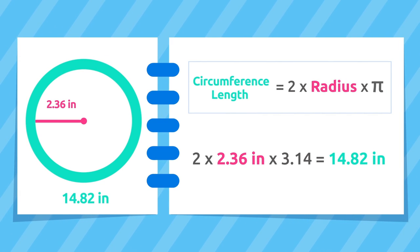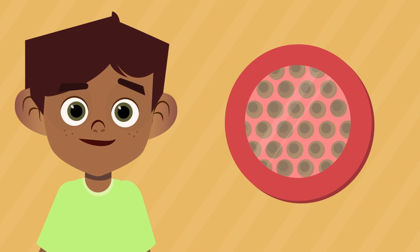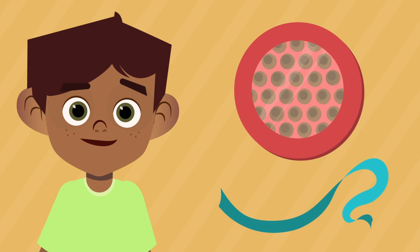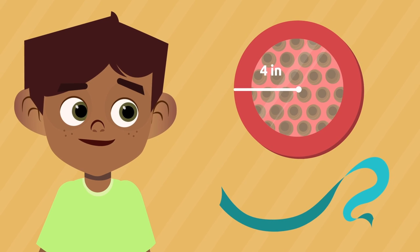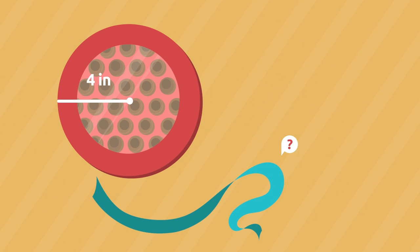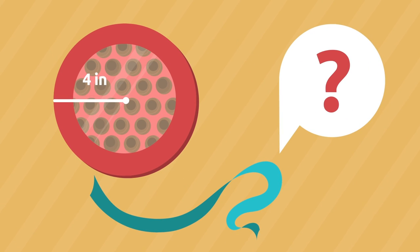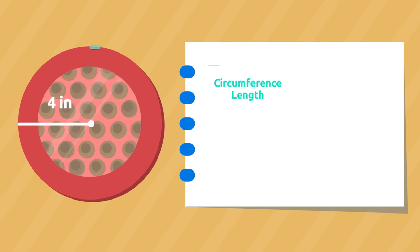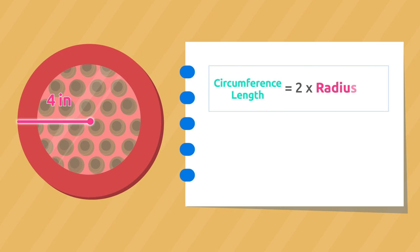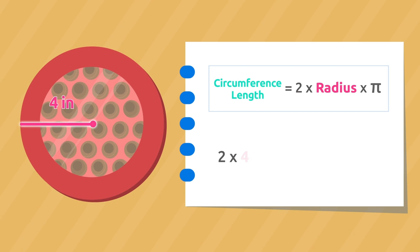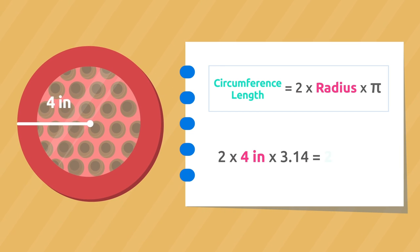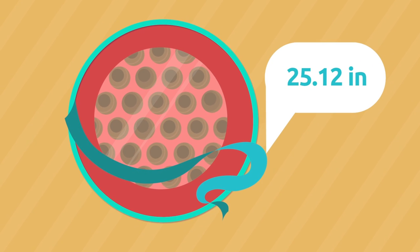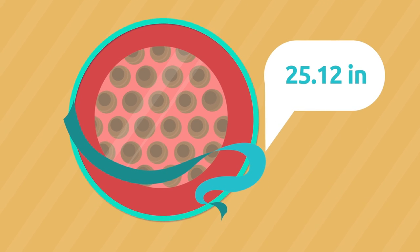Let's look at some real-life situations. Mark wants to decorate a box of chocolates using some wrapping string. The radius of the circumference of the box measures 4 inches — how many inches of wrapping string does he need to buy? We multiply the radius by 2 and by pi. Mark needs to buy 25.12 inches of wrapping string to decorate the box of chocolates.